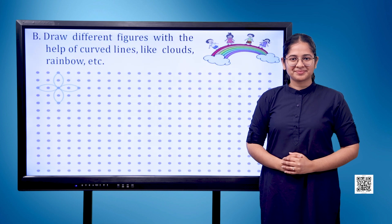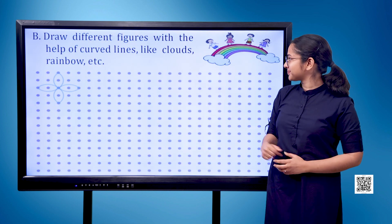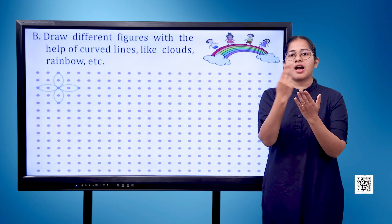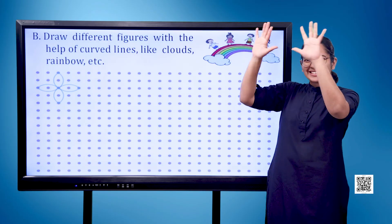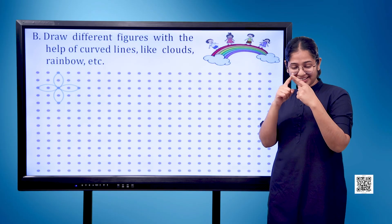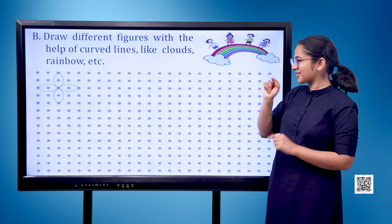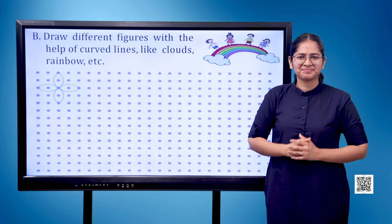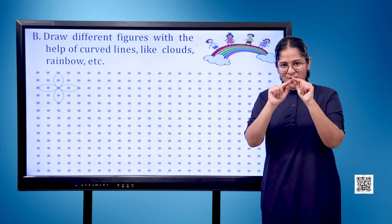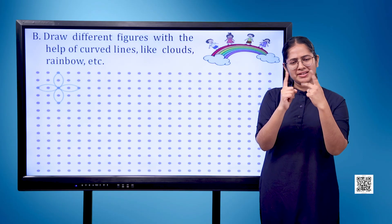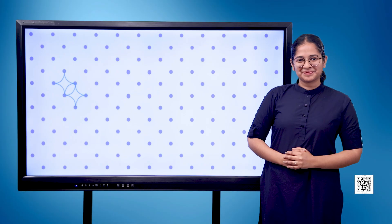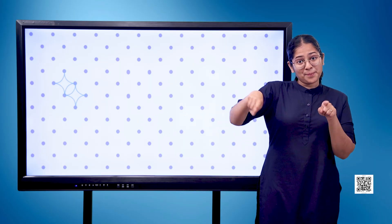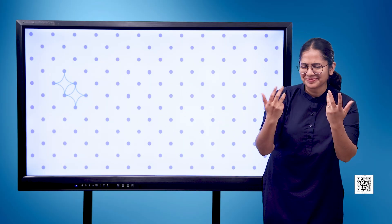B. Draw different figures with the help of curved lines like clouds, rainbow, etc. Here we see a cluster of dots once again. A shape of a flower has been made tracing along the dots. In the second image, a star-like pattern has been drawn tracing along the dots.